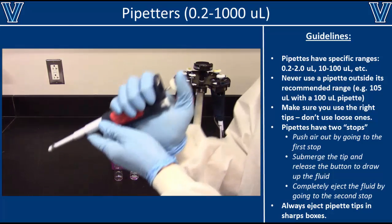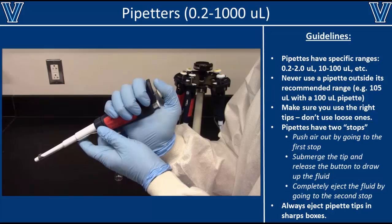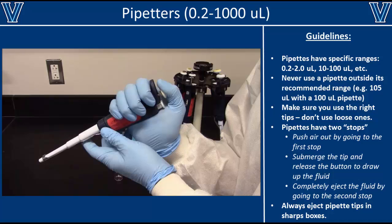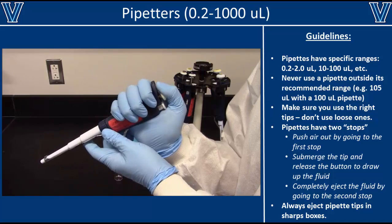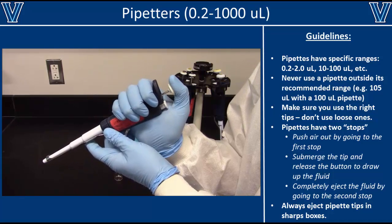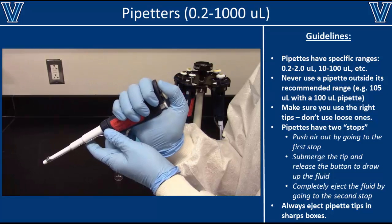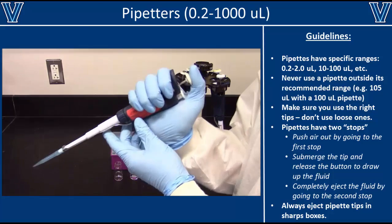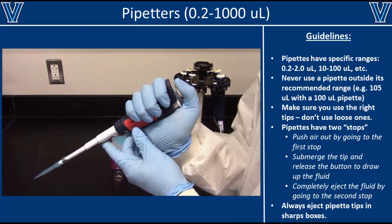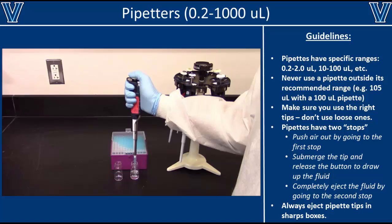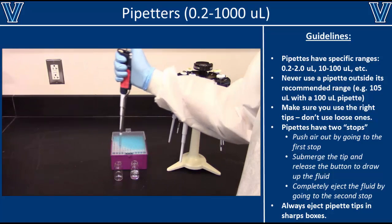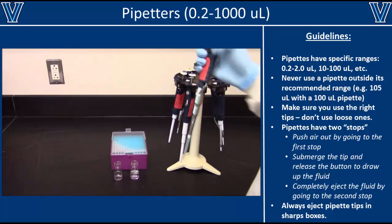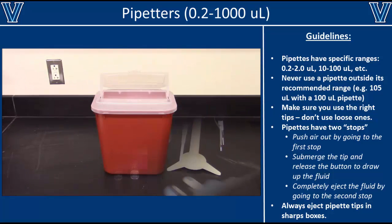Pipettes use a two-stop plunger system to transfer liquids. The first stop is used to draw up the liquid, and the second stop is used to completely eject the liquid from the tip. When transferring a sample, begin by pushing the plunger down to the first stop to eject all of the air. Then submerge the tip and release the plunger. As you eject the sample, push all the way to the second stop to make sure that all the liquid leaves the tip.